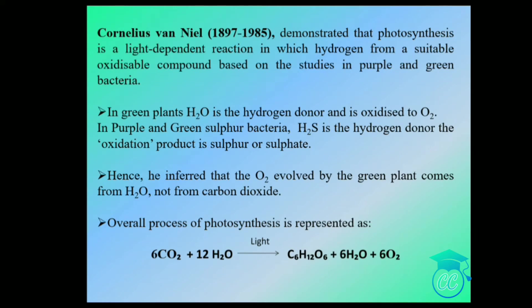In green plants, water is the hydrogen donor and it is oxidized to oxygen. In purple and green sulfur bacteria, H₂S is the hydrogen donor and the oxidation product is sulfur or sulfate. From this study, van Neel inferred that oxygen is evolved by green plants from water, not from carbon dioxide. The overall process of photosynthesis is: CO₂ + H₂O → (light) → glucose + water + oxygen.